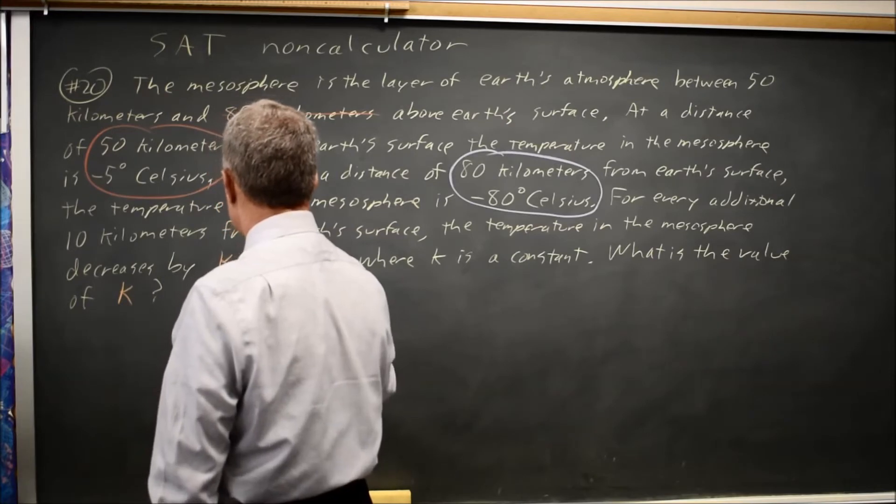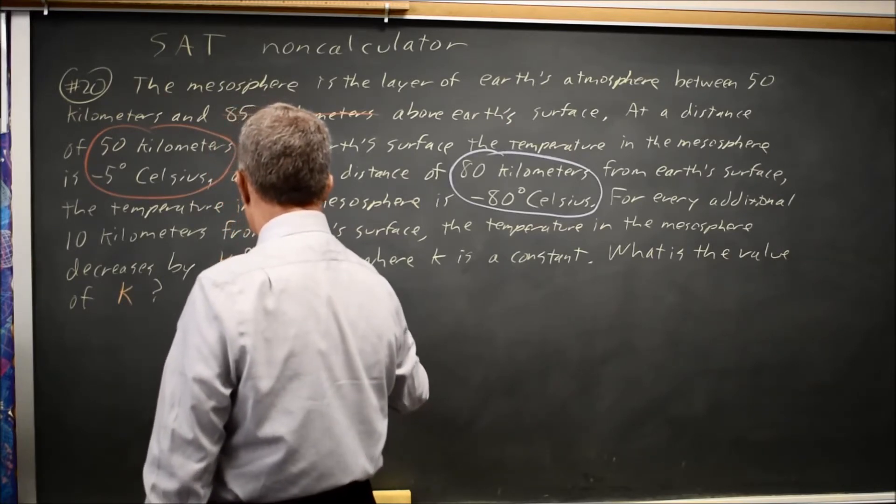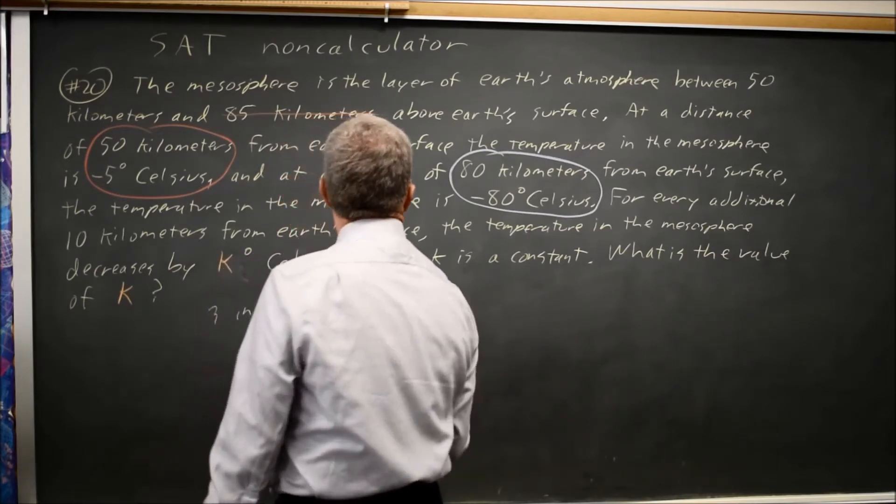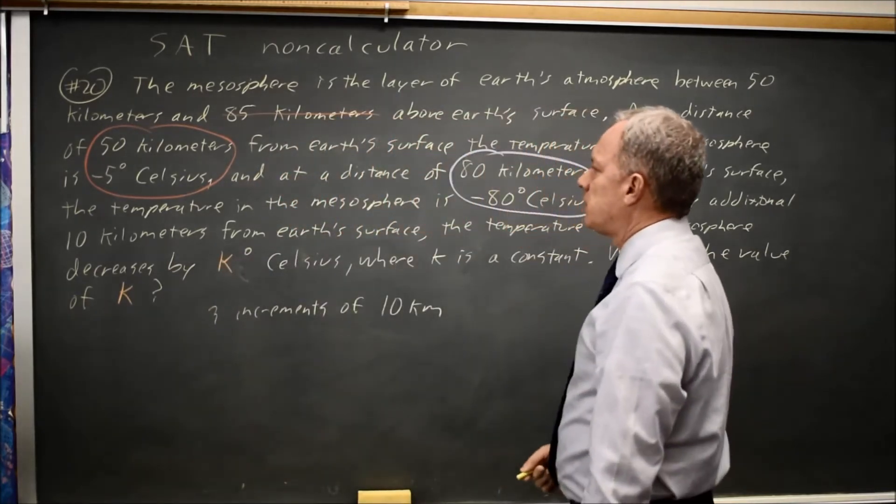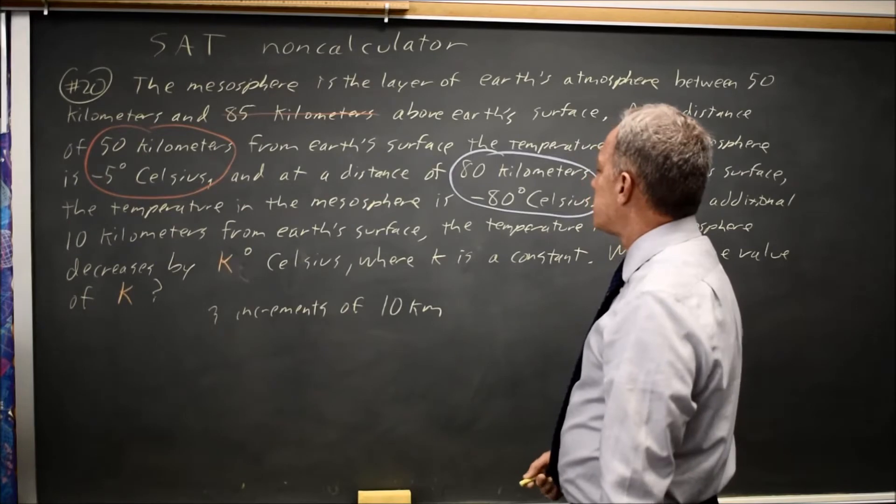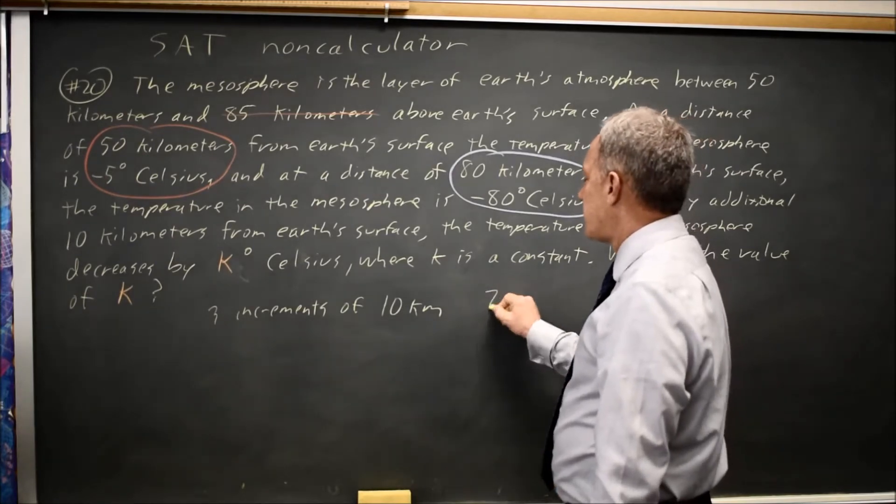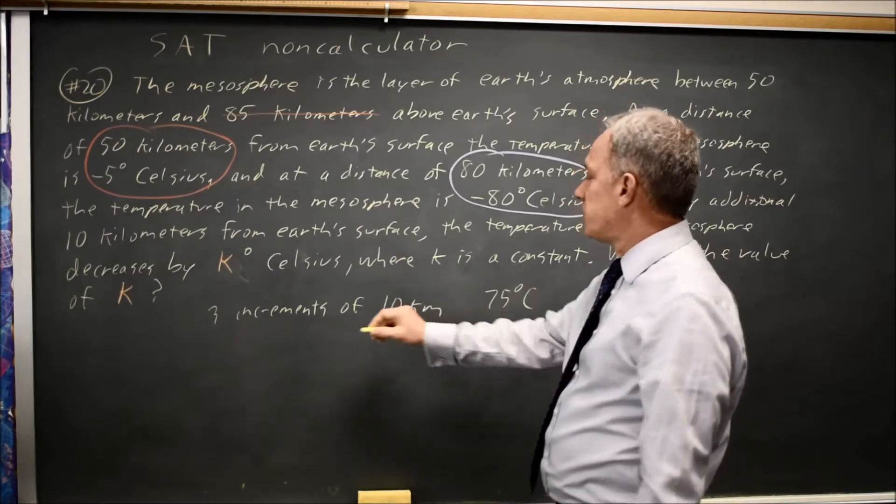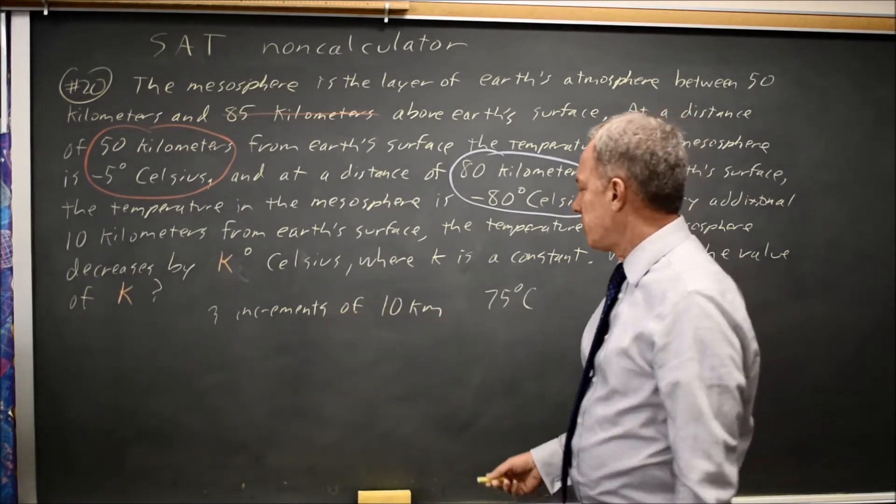And the temperature changes by negative 5 minus negative 80, which is 75 degrees C. So, if you divide 75 degrees C into three equal increments,